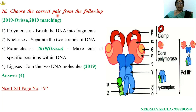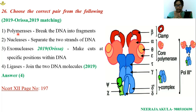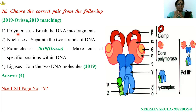Question number 26: choose the correct pair from the following. Polymerases are enzymes responsible for polymerization of nucleic acids, categorized into two types: DNA polymerases and RNA polymerases. DNA polymerases are involved in the replication process. RNA polymerases play an important role in transcription. DNA polymerases are categorized into three types: DNA polymerase I, DNA polymerase II, and DNA polymerase III.